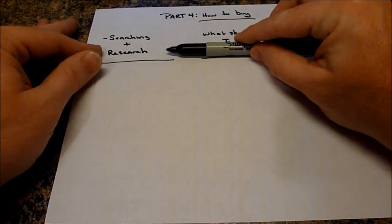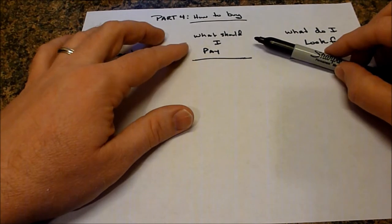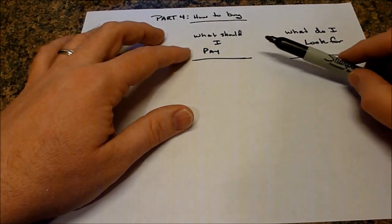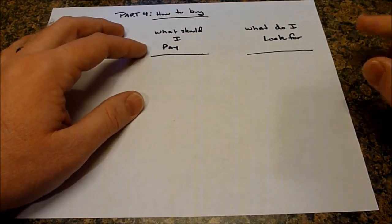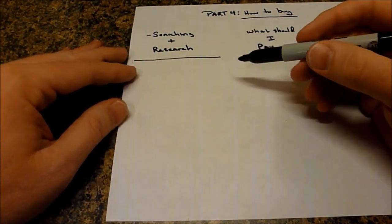We're going to separate this into three parts: the search for and research of your new to you or new machine, what should I pay, and what do I look for in the machines you're looking at used. So we'll start off with the searching and research.